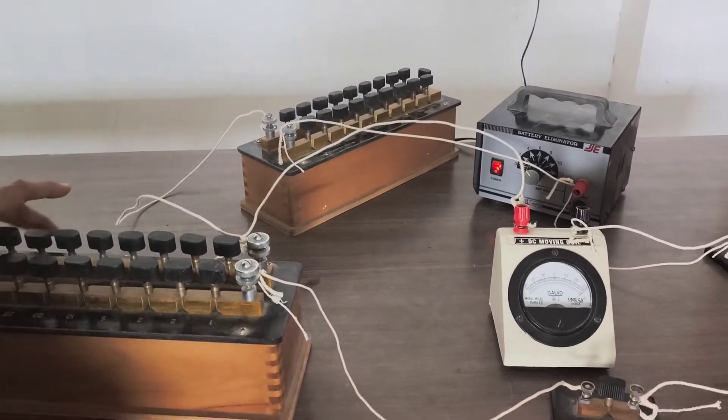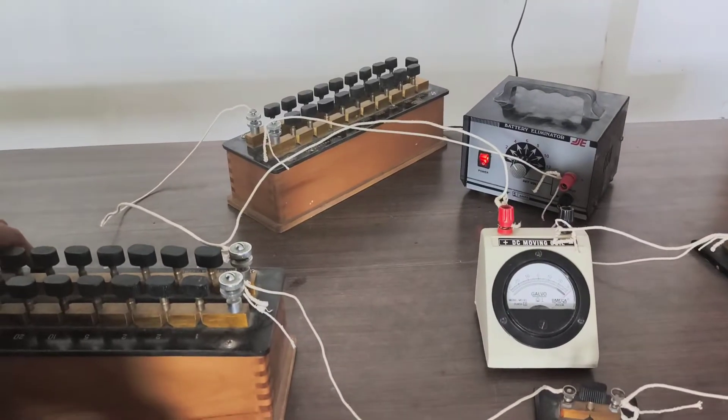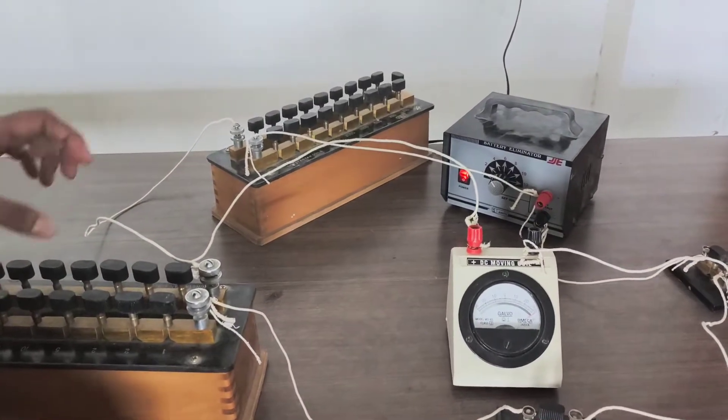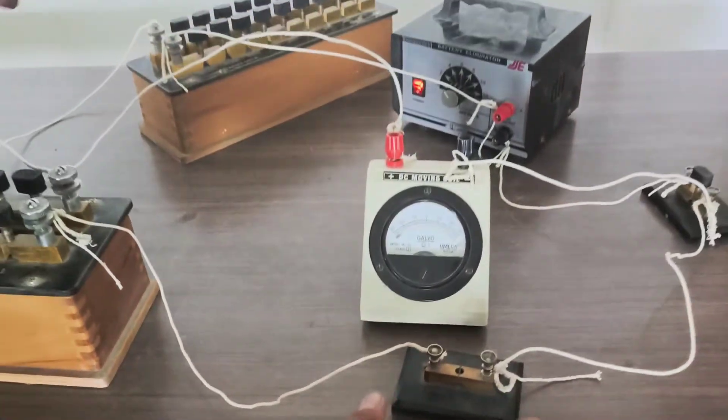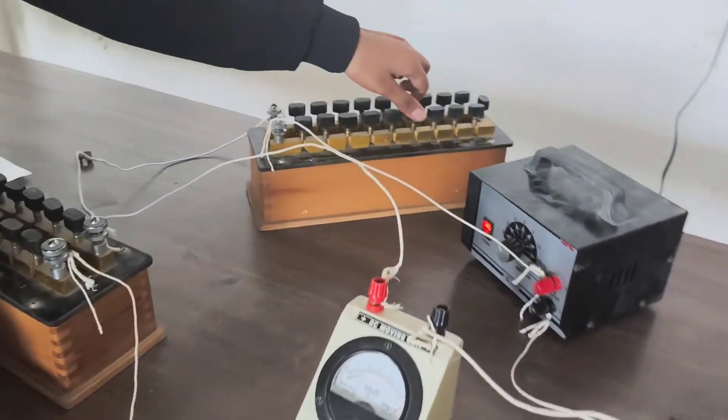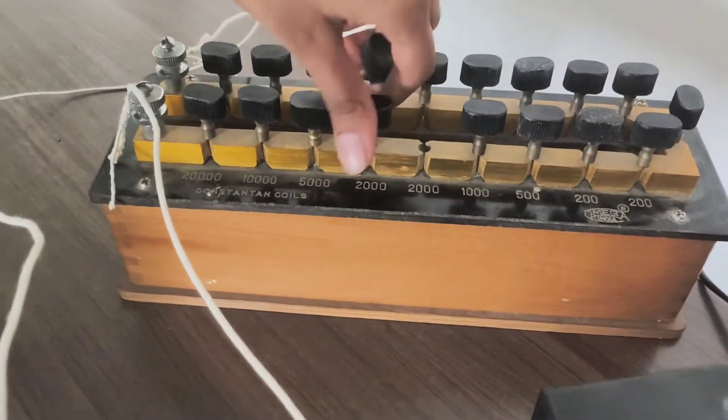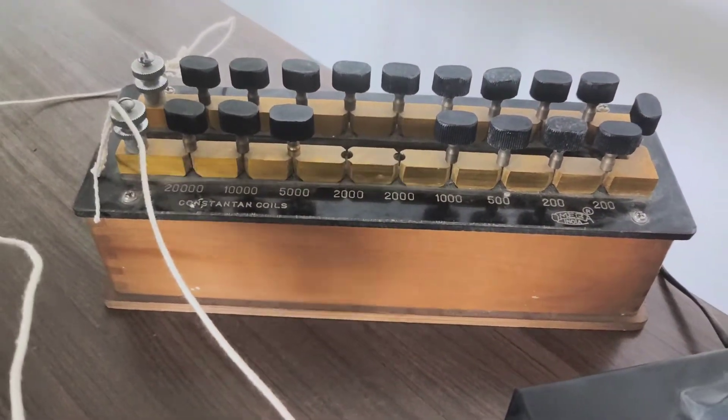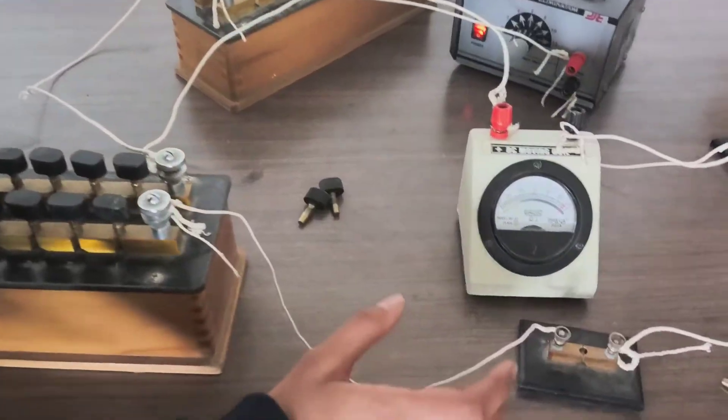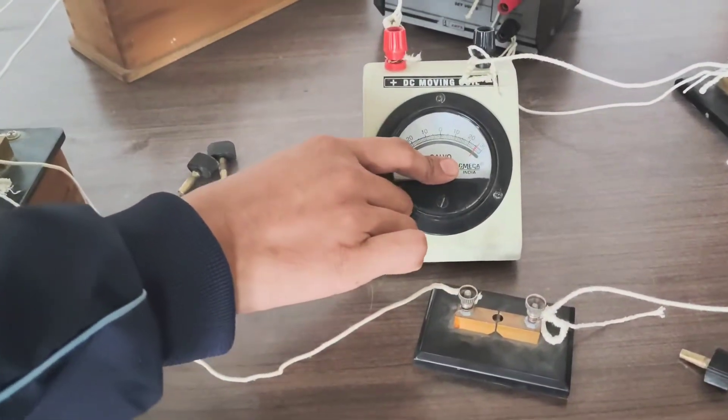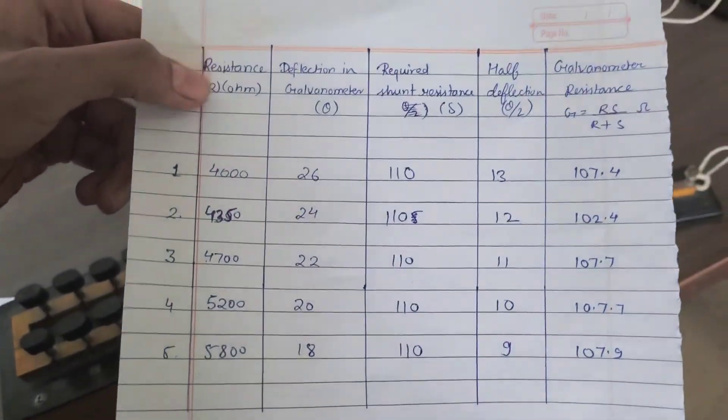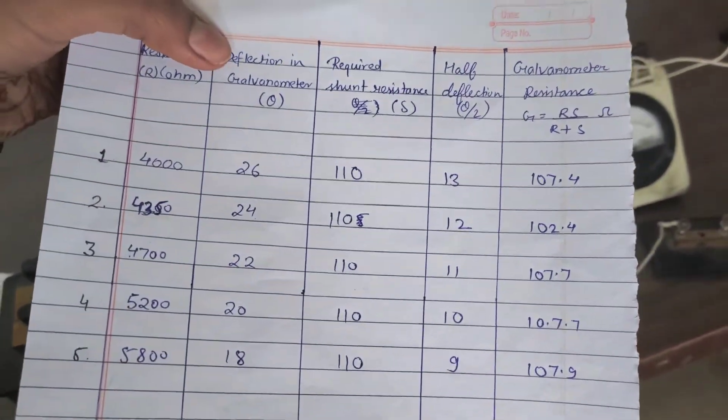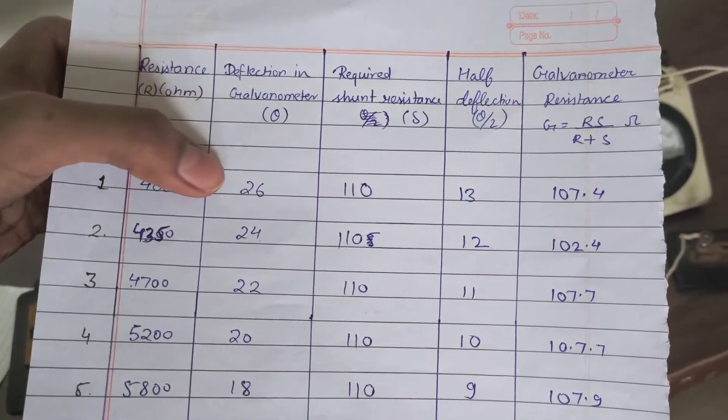Now beginning with our experiment we have to take some readings. So to start the experiment, firstly we have to disconnect the connection of key 2. Now we have to plug out the resistance of 4000 ohms from this larger resistance box. You can see here the deflection is about 26. Here you can see the resistance is 4000 ohms and the deflection in the galvanometer, that is theta, is 26.